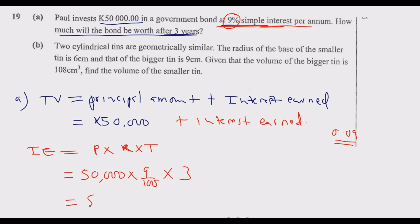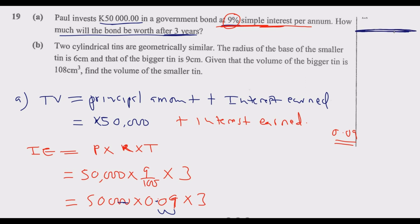So we have 50,000 multiplied by 0.09, which is 9 divided by 100, then multiplied by 3. Since we don't have a calculator, the easiest way to multiply is to move the decimal places — two places — and delete the two zeros from 50,000. We are left with 9 multiplied by 500.